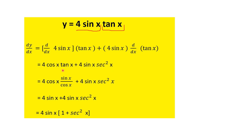So dy/dx = 4 cos x · tan x + 4 sin x · sec²x. Now expand tan x as sin x / cos x. So we have 4 cos x · (sin x / cos x) + 4 sin x · sec²x. The cos x from the numerator cancels with the denominator, leaving 4 sin x + 4 sin x · sec²x. Taking 4 sin x as common, we get 4 sin x(1 + sec²x).